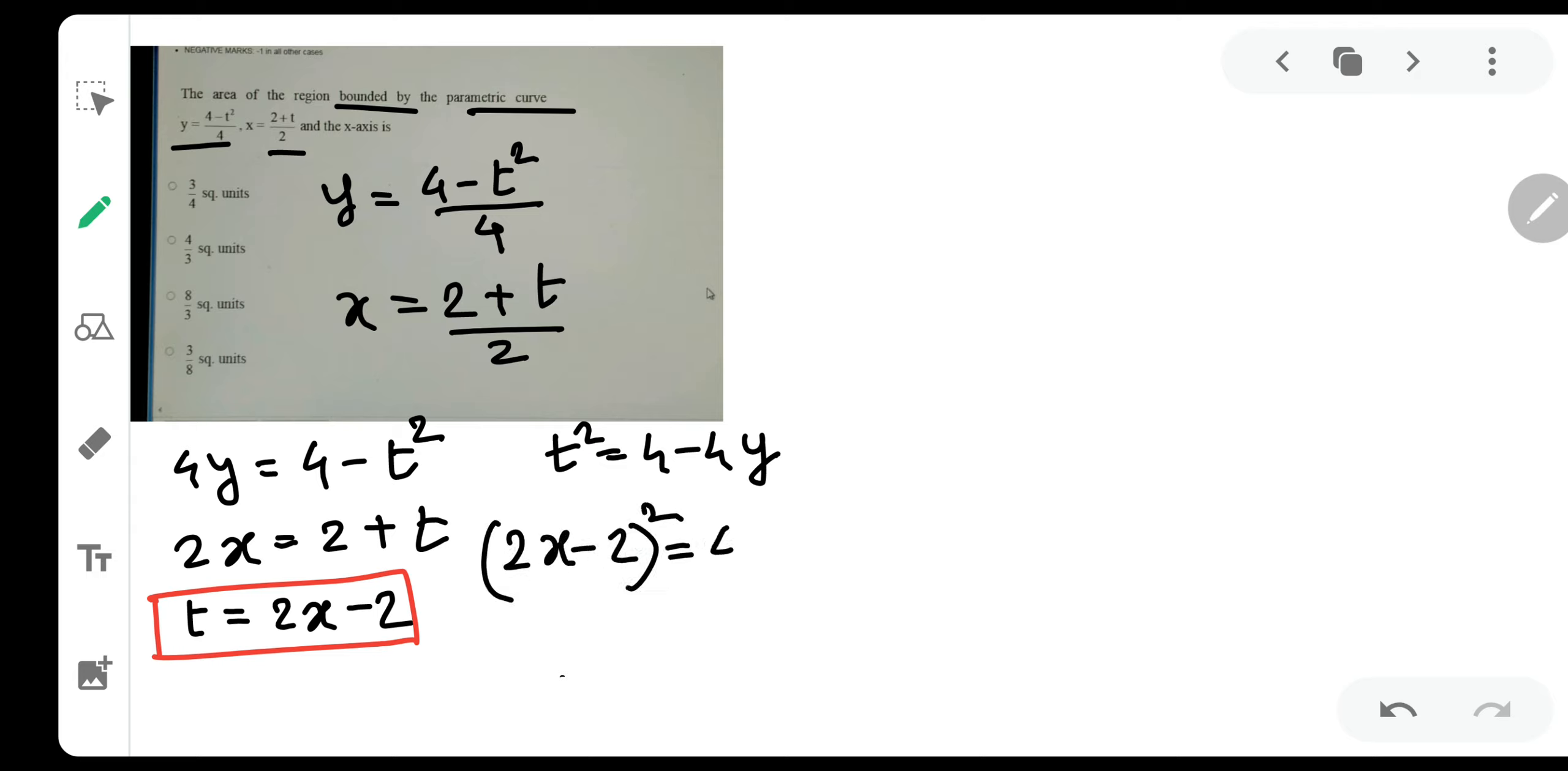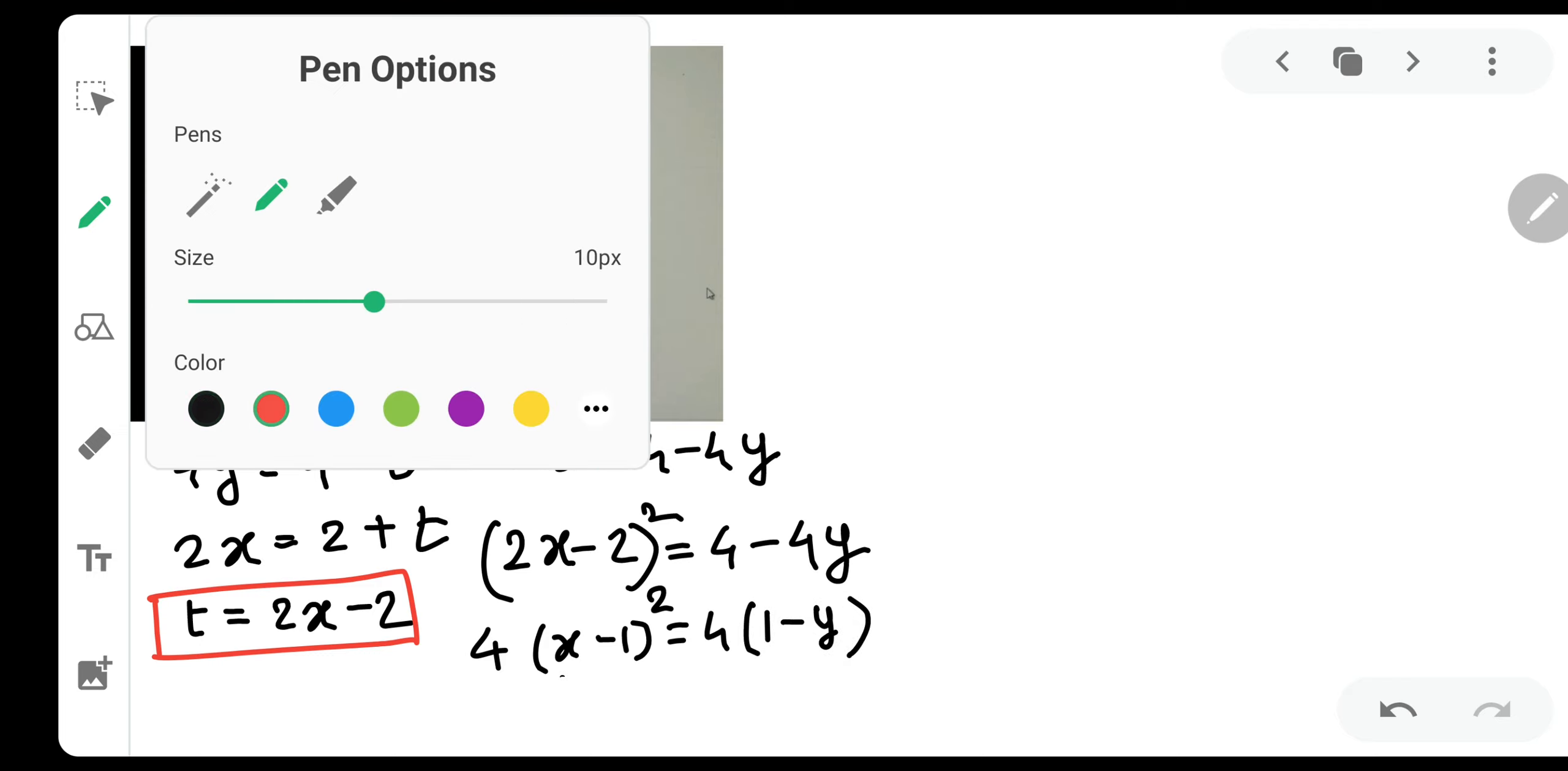So 2x minus 2 the whole square equals 4 minus 4y. Let me take 2 common but 2 will be taken common with the square. So it will become 4. And inside you have x minus 1 the whole square. Now just take 4 common over here and you will get 1 minus y.